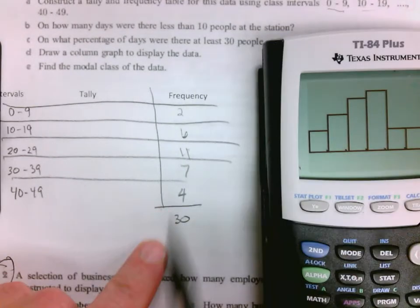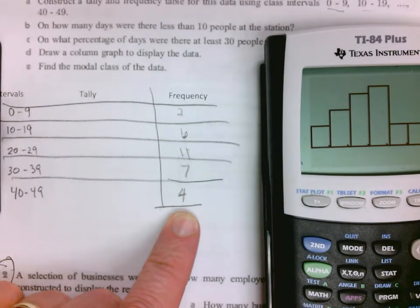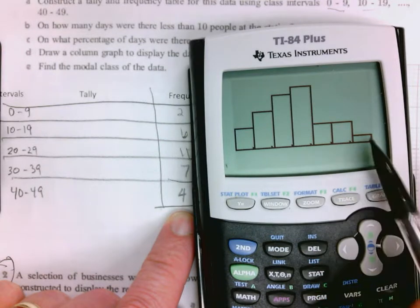The calculator is going to pick the divisions. So you notice we have 1, 2, 3, 4, 5 different. This picked 1, 2, 3, 4, 5, 6, 7. So don't just assume that it's going to match up.